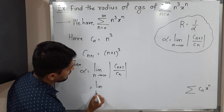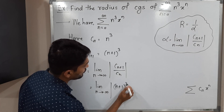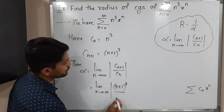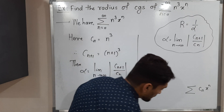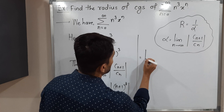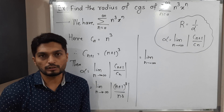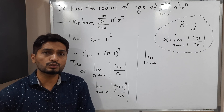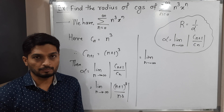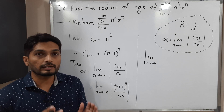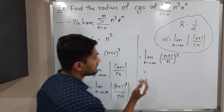This equals the limit as n tends to infinity of the modulus of (n+1) cubed divided by n cubed. There is no need for the modulus since n is a natural number and n+1 is also a natural number, so there is no chance of getting a negative number. The numerator has power three and the denominator also has power three, so we can write a common power: the expression becomes ((n+1)/n) cubed.